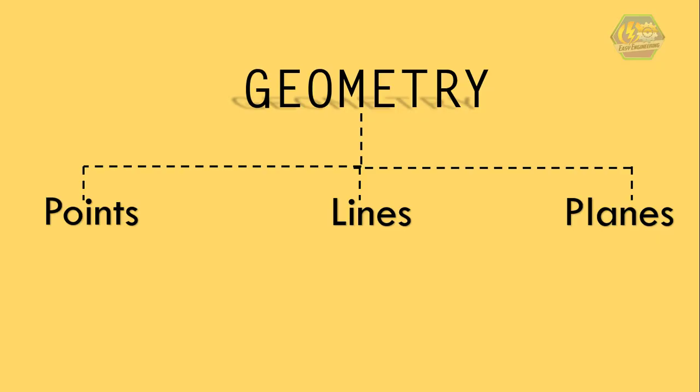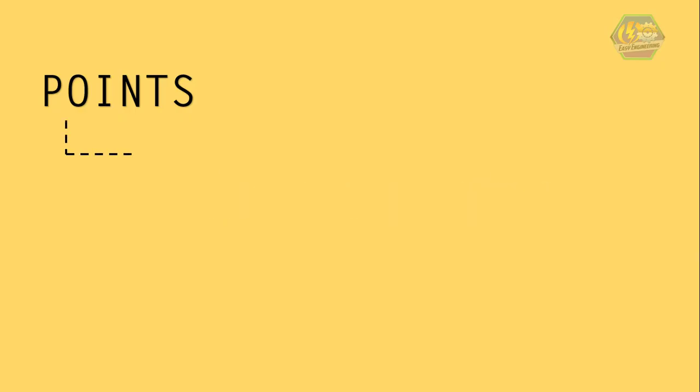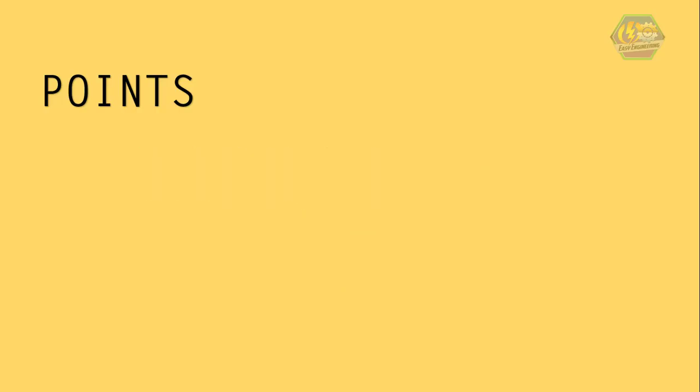We know what points are, right? It is a small dot and usually we use it to end a sentence in paragraphs, stories, etc. But in geometry, a point is a location that has no size, no width, no length, and no depth. A point is a small dot with a capital letter. Now let's draw two points, namely point A and point B.